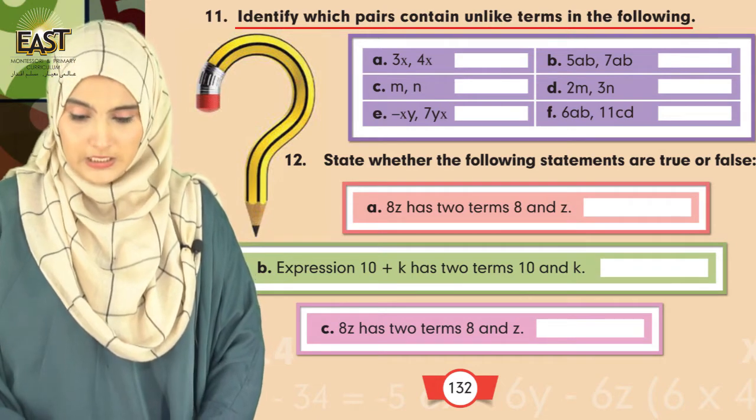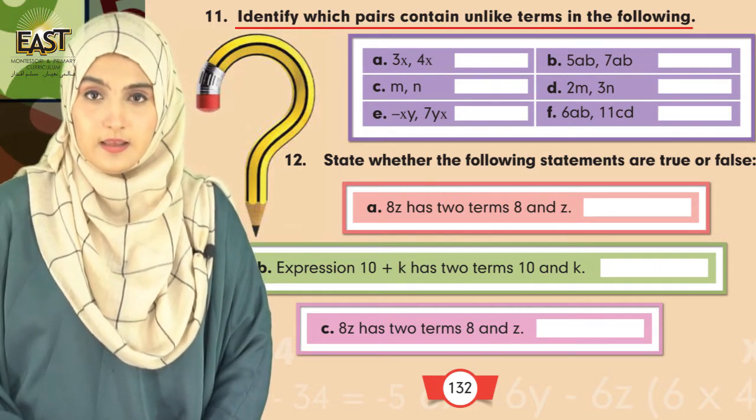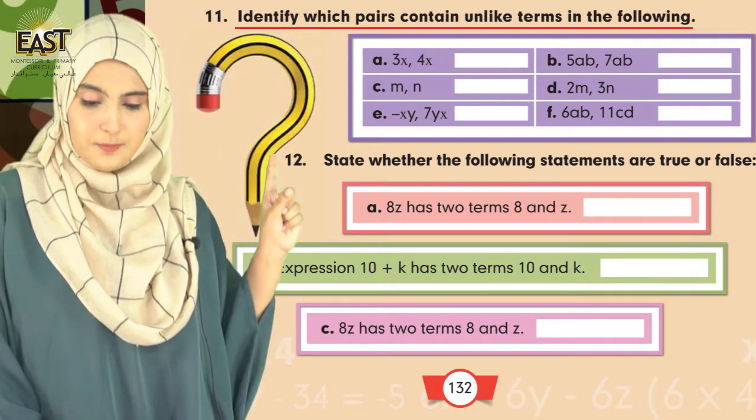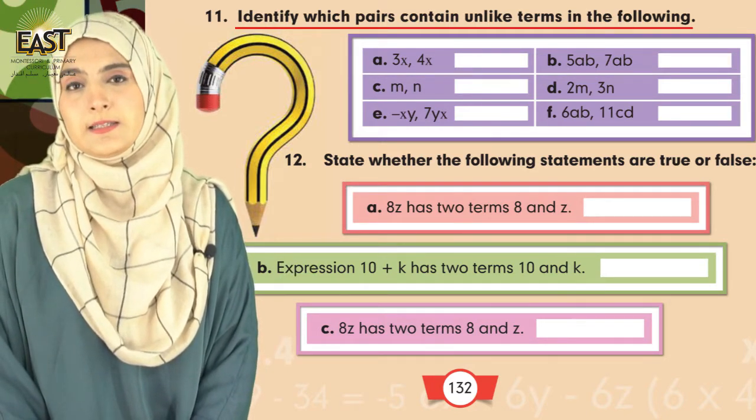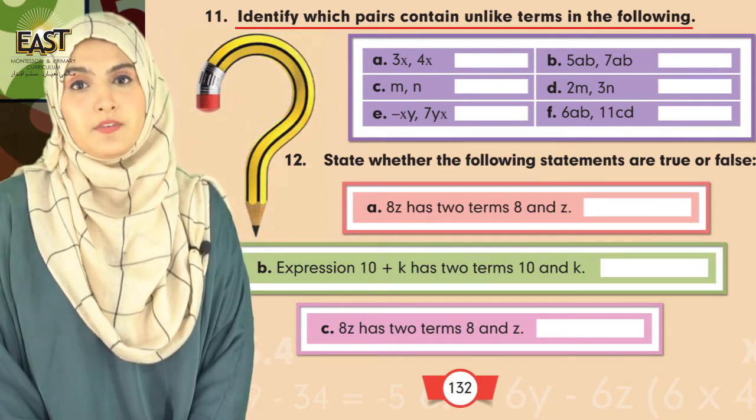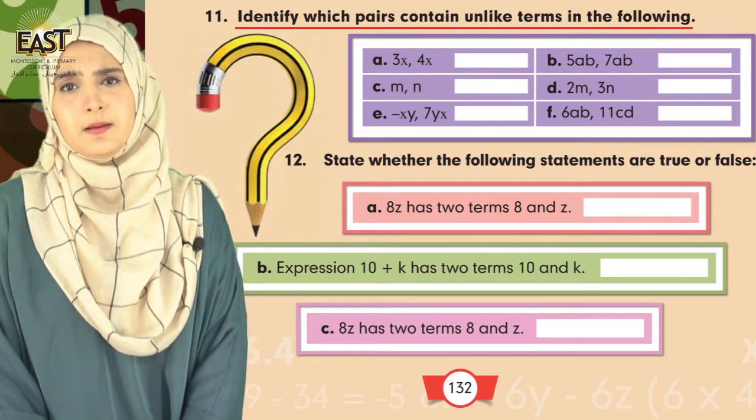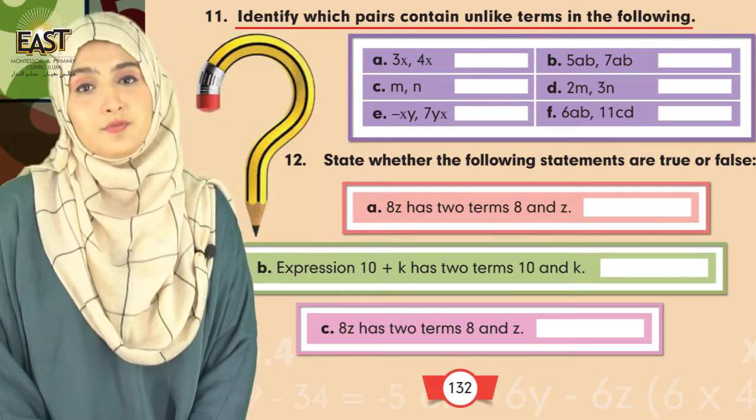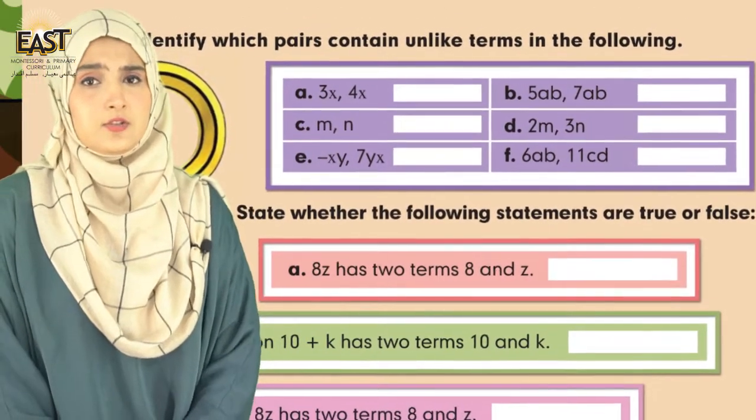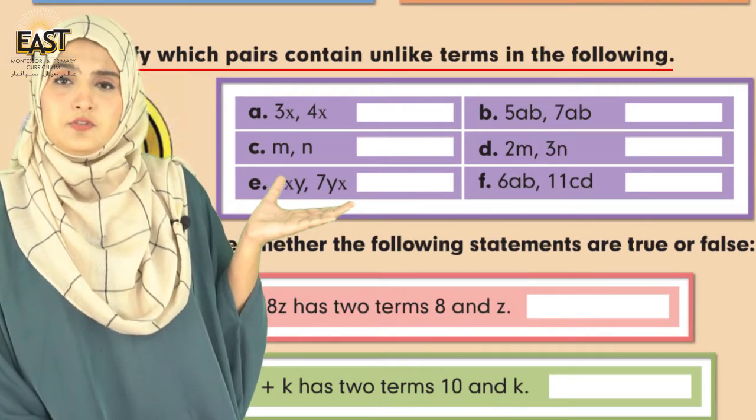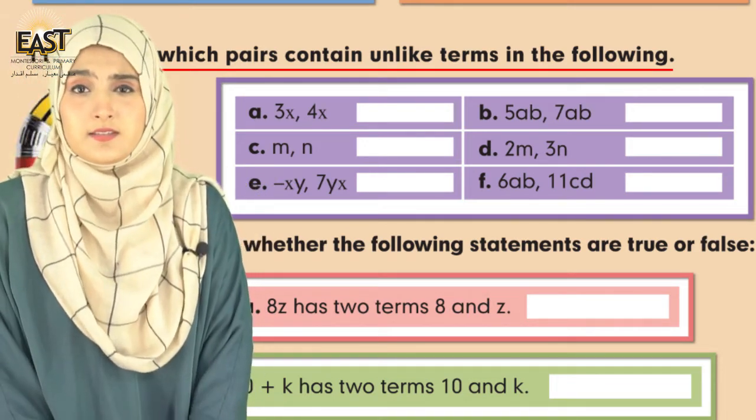Let's go to question number 11. Question number 10 is your homework as well. In question number 11, we are going to do here. Identify which pairs contain unlike terms in the following. Do you remember that two days before we had unlike and like terms? In your notebooks, you can write definitions. Let's solve the question first, just revise the definition of unlike terms. We have to revise this. Unlike terms - the coefficient should be same, but the variable will not be the same. What do we need to do? You have to make a chart or group for unlike terms.